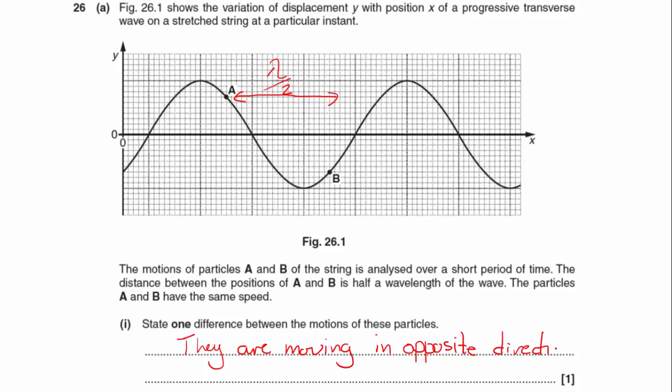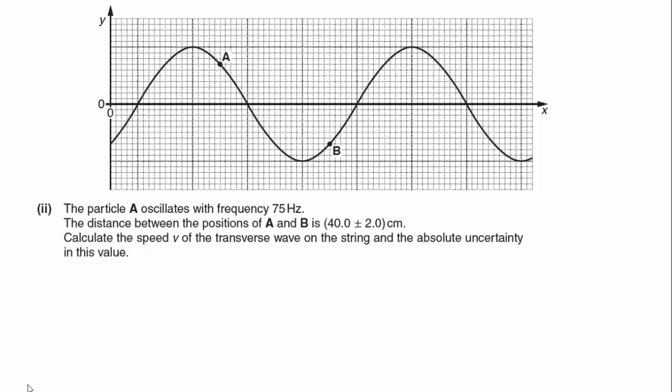Okay, now let's move on to part B. Part 2 of A, sorry. The particle A oscillates with a frequency of 75 Hertz. The distance between the positions of A and B is 40 plus or minus 2 centimeters. Calculate the speed V of the transverse wave on the string and the absolute uncertainty in this value.